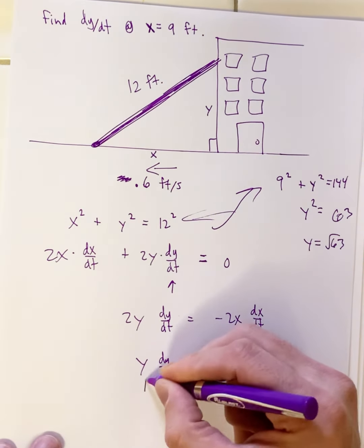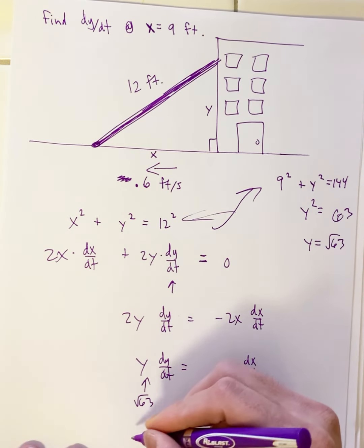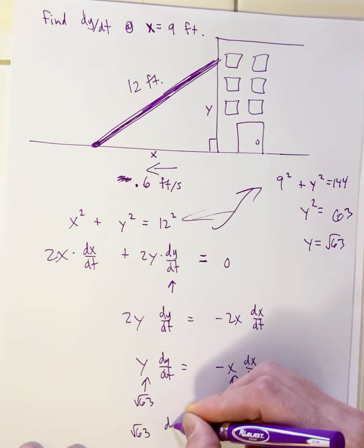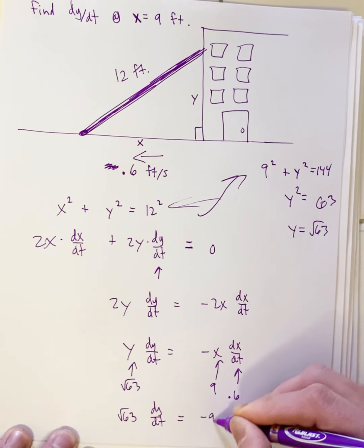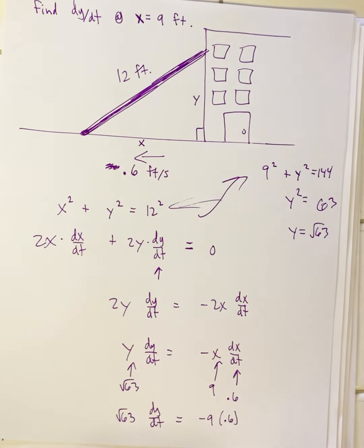That goes here. And now let's see. So let's clean this up. We have square root 63 dy/dt equals negative 9 times 0.6. Let's divide square root 63 into that.